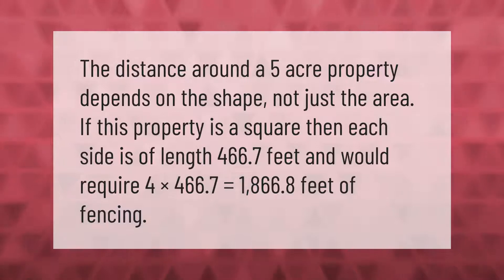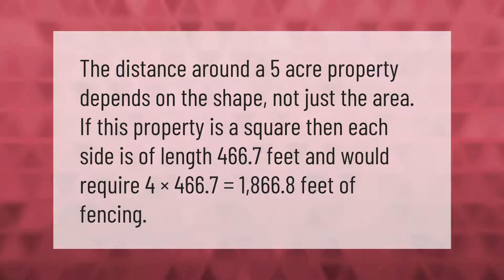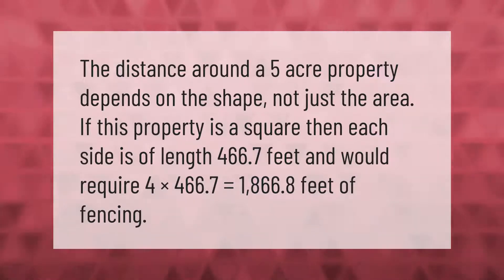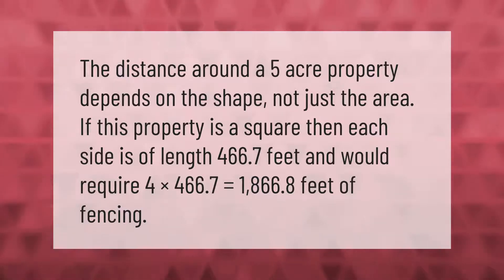The distance around a 5-acre property depends on the shape, not just the area. If this property is a square, then each side is of length 466.7 feet, and would require 4 times 466.7 equals 1,866.8 feet of fencing.